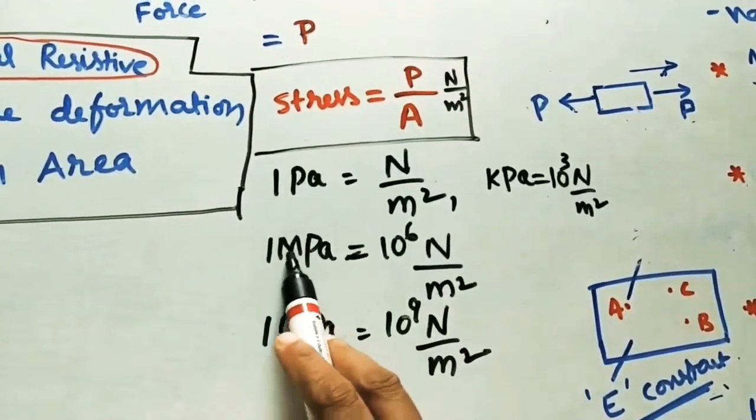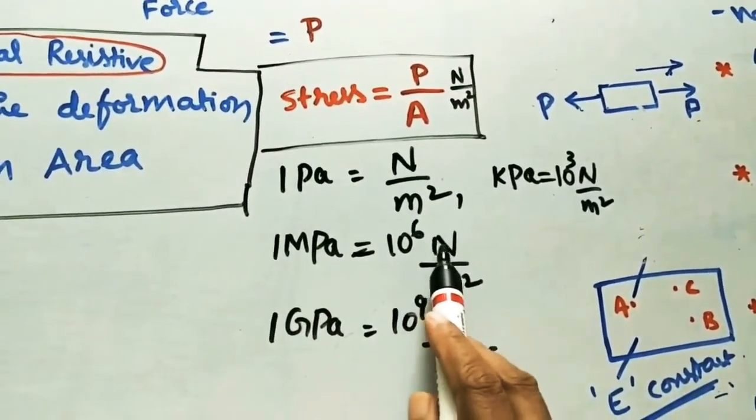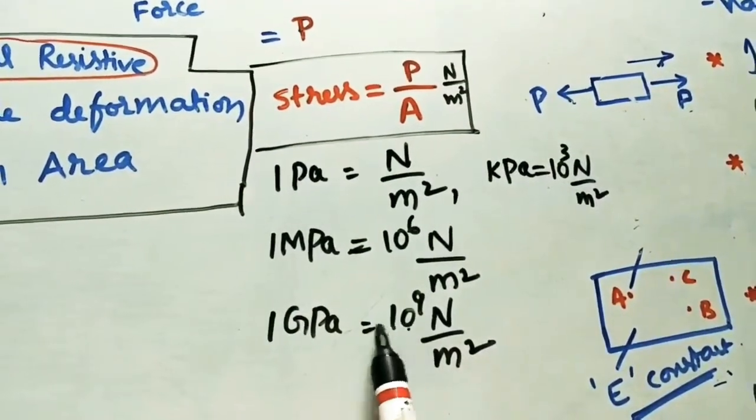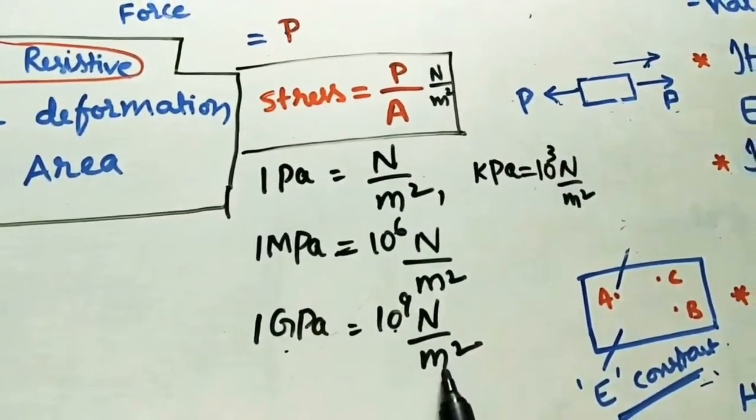Sometimes giving megapascal. Mega means 10 power 6. Pascal means Newton per meter square. Sometimes giving gigapascal. 10 power 9. Giga means 10 power 9. Pascal means Newton per meter square.